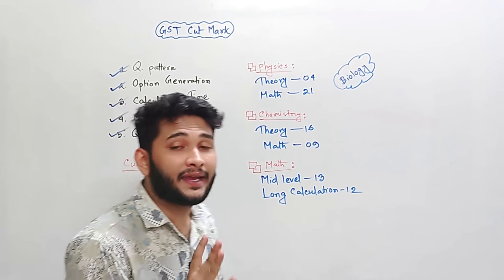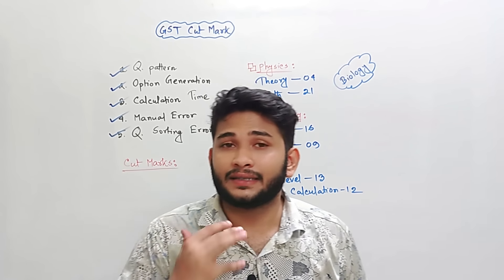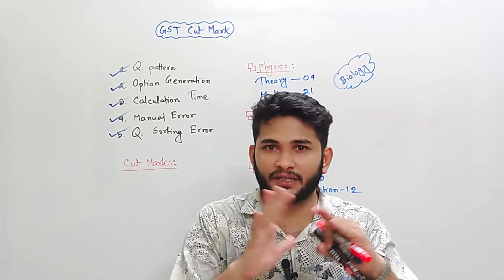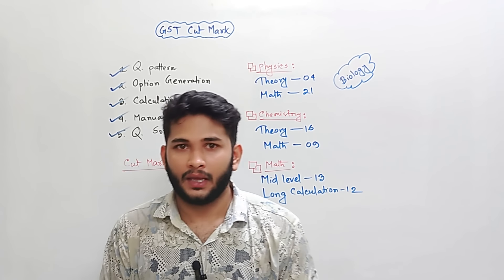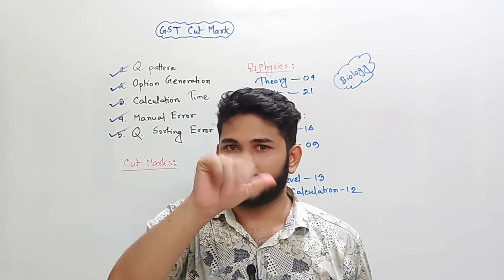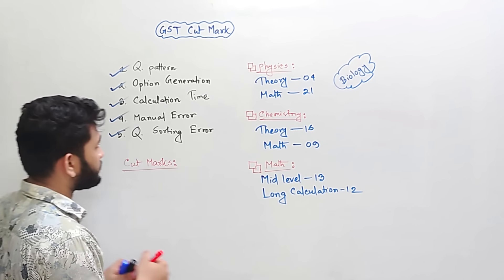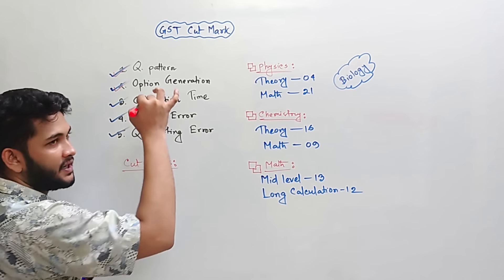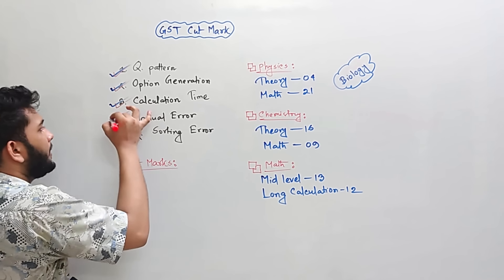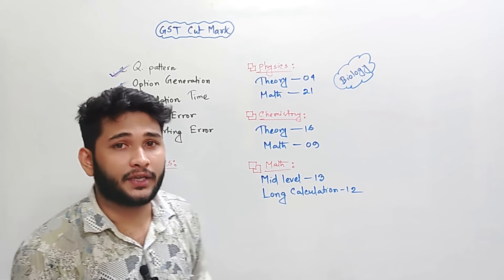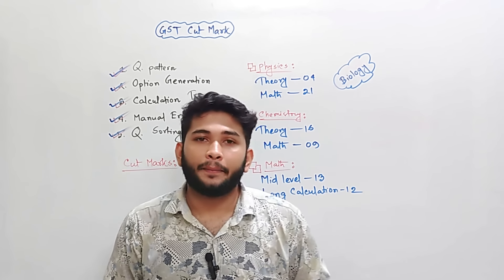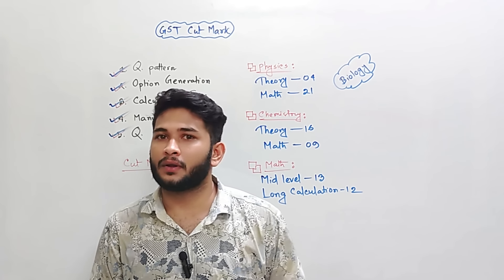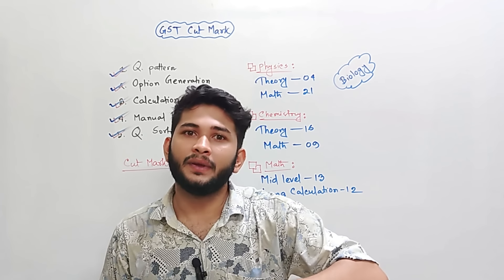If you want to cut marks, you have to work with the best parameters. So these are the total PASTA parameters. What are the PASTA parameters? First of all: question pattern, option generation, calculation time, manual, and question shorting. The same thing we have to do.